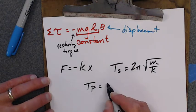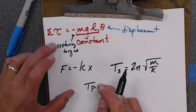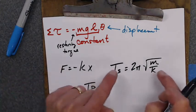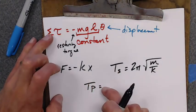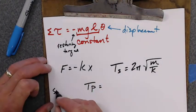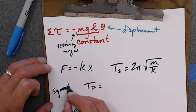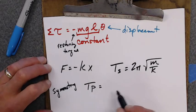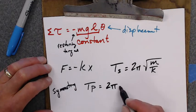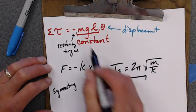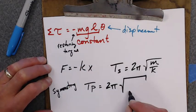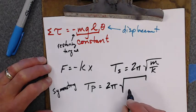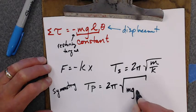But I want the period of a pendulum. So the period of the pendulum, if this is for that, how do I make this that? I'm going to use my symmetry argument, meaning they kind of look alike. So I'm going to have a 2 pi root. My k is this thing, m, g, l. m, g, l.